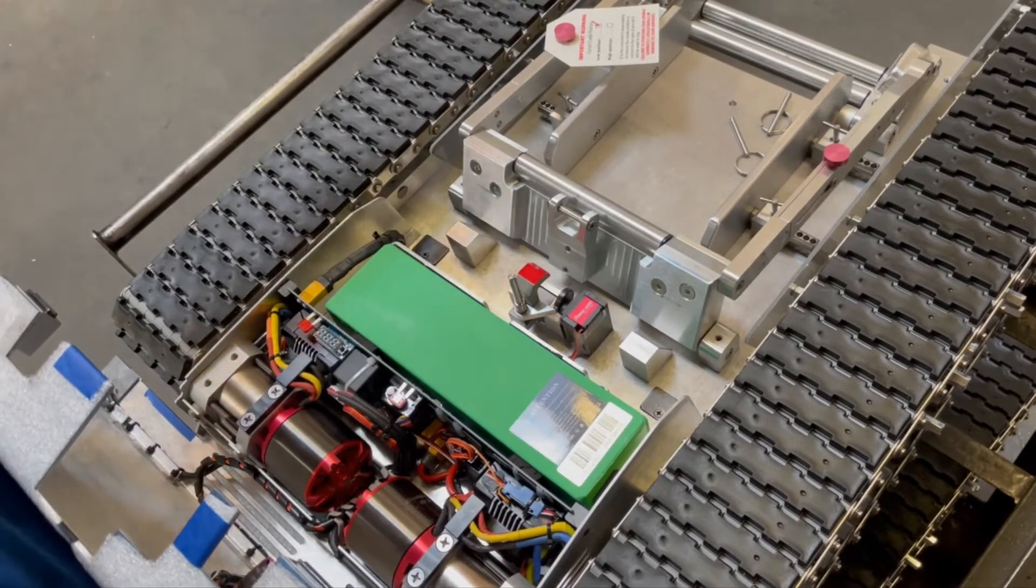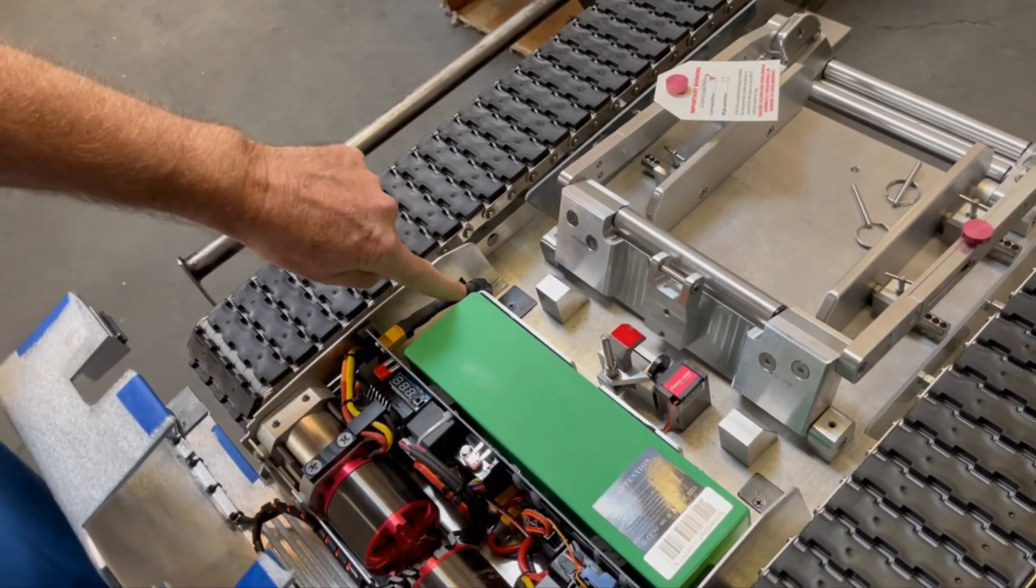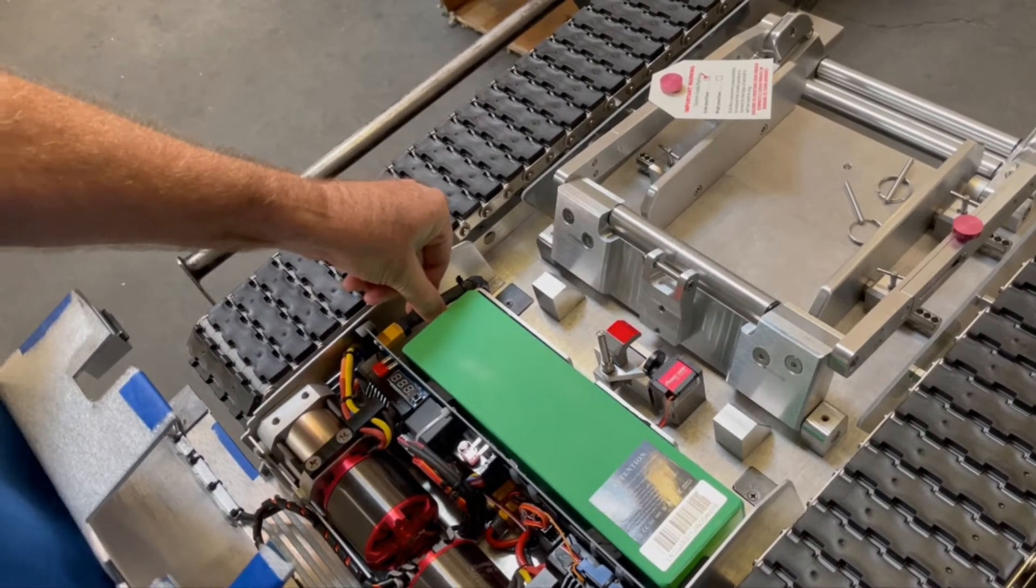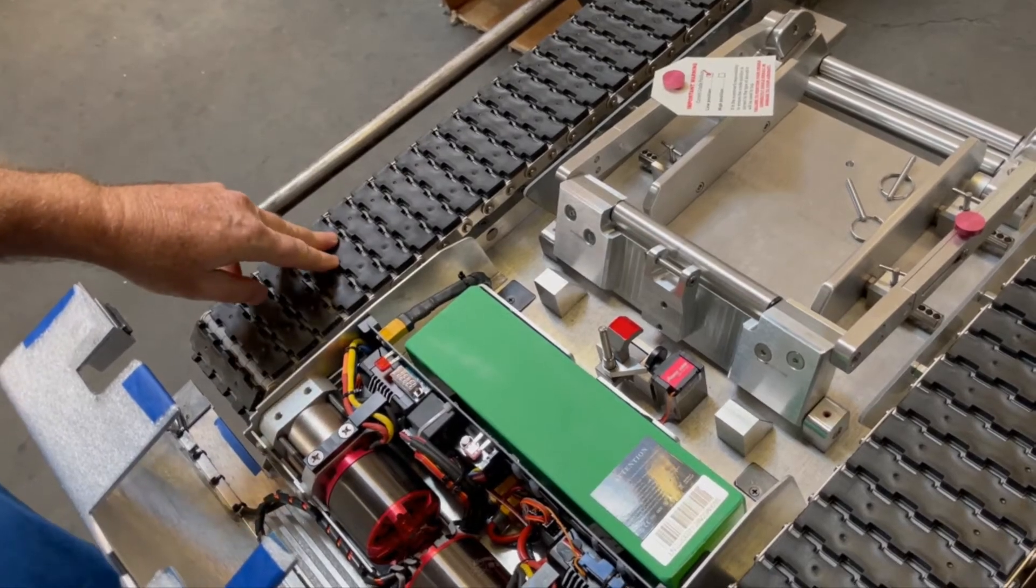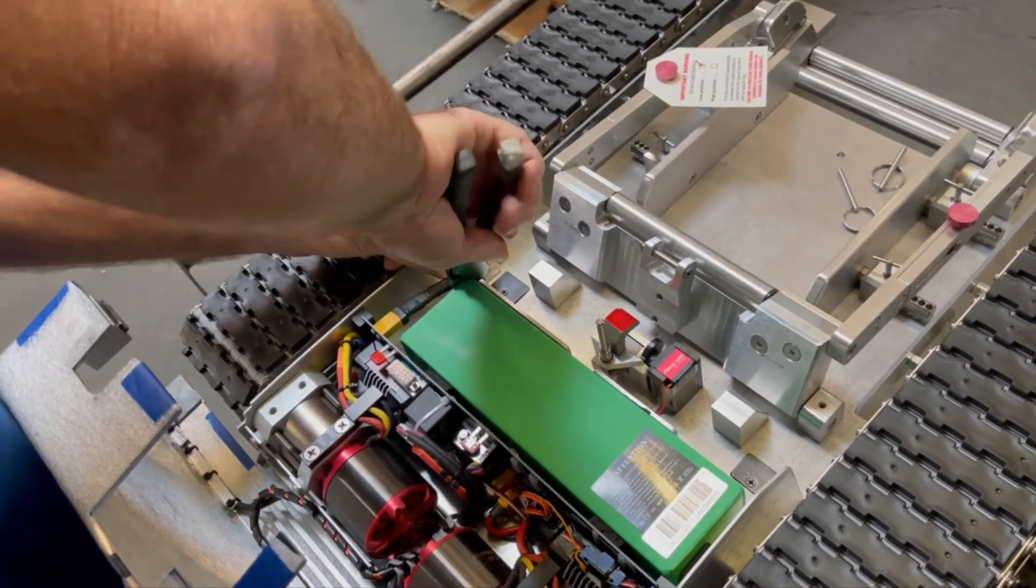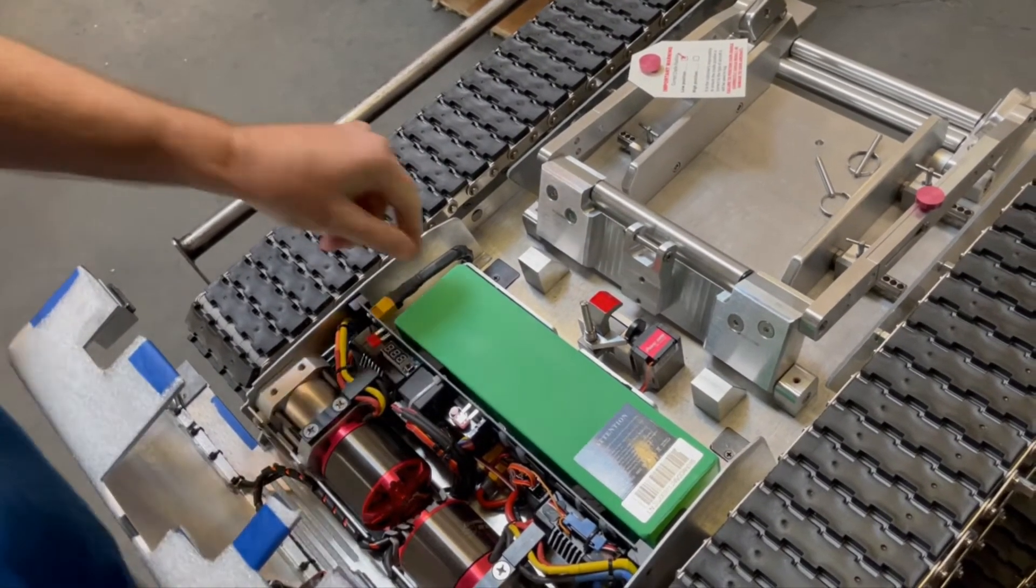To take the battery out, when we ship them a lot of times we put a zip tie on the cord here so it doesn't come loose during shipping. I'm going to go ahead and clip that zip tie. Now the battery can be unplugged.